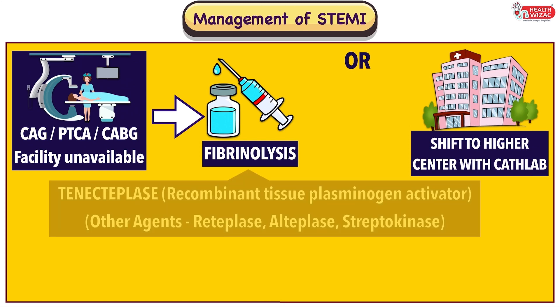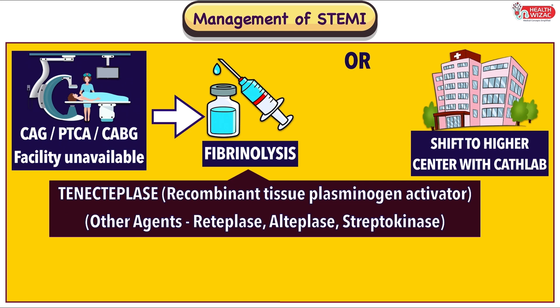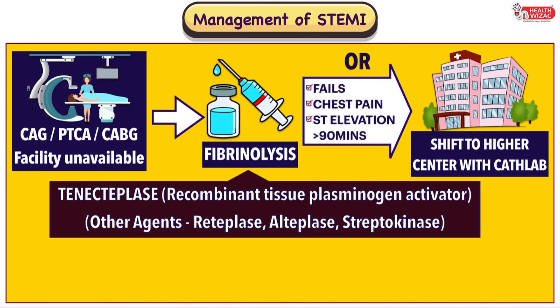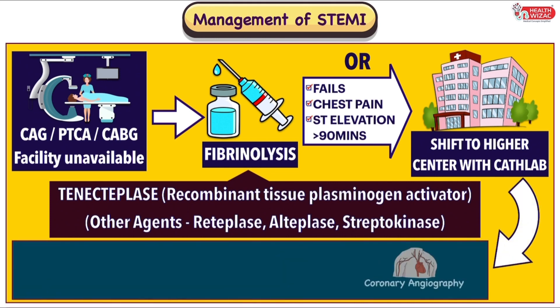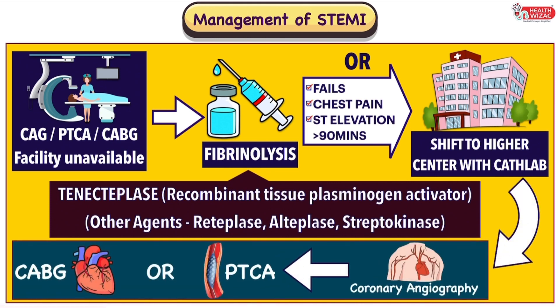For fibrinolysis, drugs like Tenecteplase — a recombinant tissue plasminogen activator — are used. Other agents include Alteplase, Reteplase, or even Streptokinase. If fibrinolysis therapy fails, the patient has persistent chest pain, or ST elevation persists even after 90 minutes of fibrinolysis therapy, then the patient should be shifted to a higher centre with CATLAB facility, and PTCA or CABG should be considered at the earliest based on the CAG report.